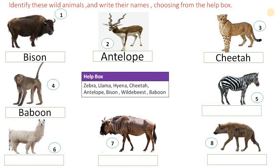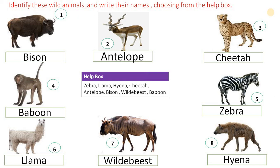Number 5, very easy — Zebra. Number 6, Llama. Llama belongs to the Camel family. Number 7, Wildebeest. Number 8, Hyena. Learn the spelling, keep reading, keep learning. Bye-bye.